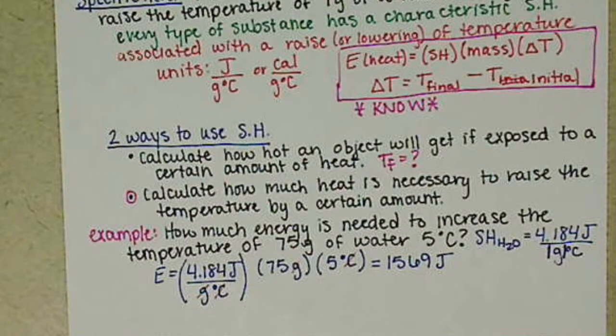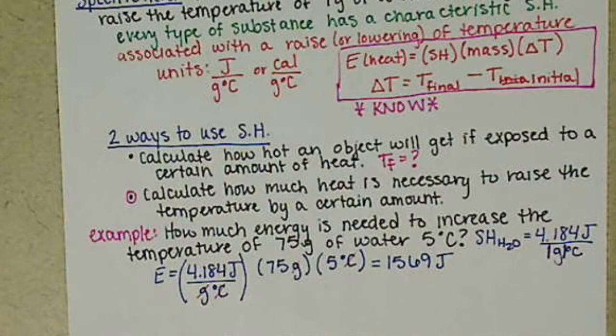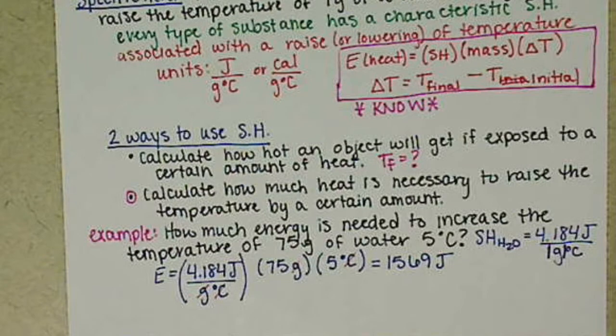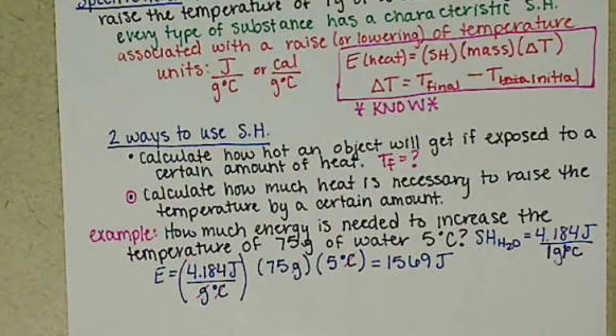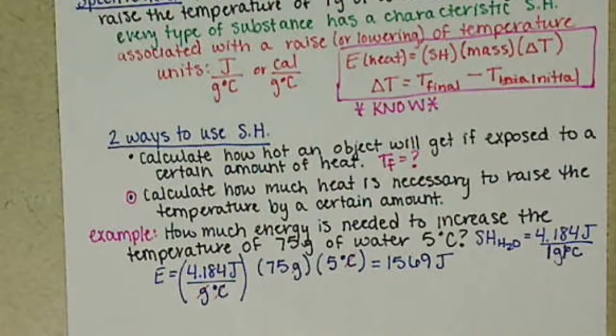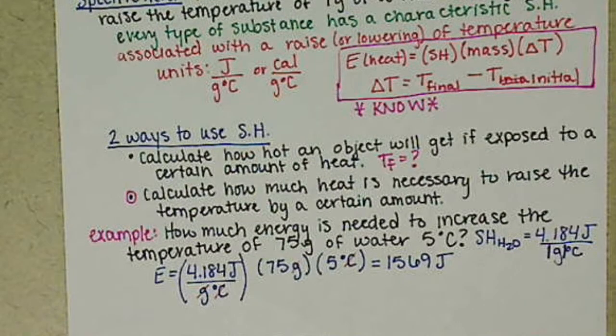Definitely work through as many QMP as you have time for. Definitely work through the sapling learning site. Make sure that you get this concept under your belt of what specific heat is and what it means before you go on and start combining the concepts of both 2.4 and 2.5. That's where we're going to combine specific heat as well as heat of fusion and heat of vaporization.